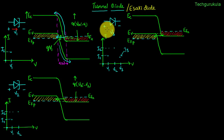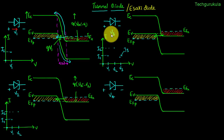Now let us increase the voltage even more to V4, where V4 is greater than V3. The energy band diagram would show band bending of q times Vbi minus V4. If you see here, there are no electrons which can actually see the holes on the p-side anymore. As a result there won't be tunneling — the tunneling current would be zero. From now on, if we increase the voltage beyond this point, current can flow only by electrons surmounting the barrier and holes surmounting the barrier.